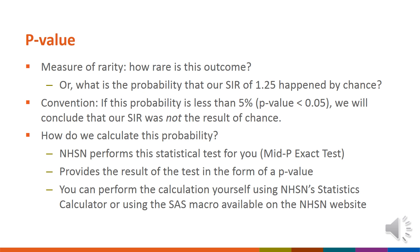NHSN uses the conventional cut point of 5% to determine rarity. That is, if the p-value is less than or equal to 0.05, or 5%, we conclude that our SIR was not the result of random chance, and therefore it is significantly different than the national baseline of 1. If the p-value is greater than 0.05, there is a higher likelihood that the SIR was a result of random chance, and that it's not statistically different than the national baseline.